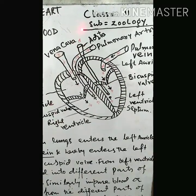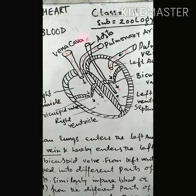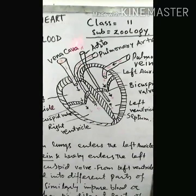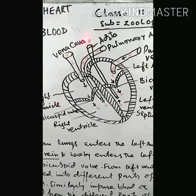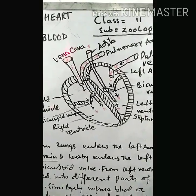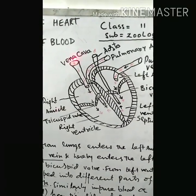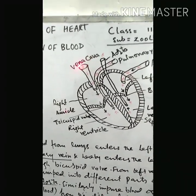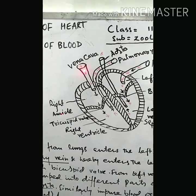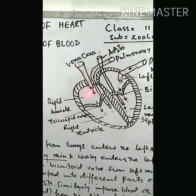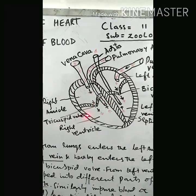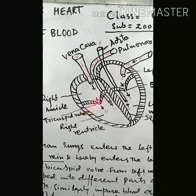From the different parts of the body — deoxygenated blood from the fingers, head, legs, other tissues, digestive system, cranium, all parts of the body — blood comes by a large vessel called the vena cava, a type of vein. It carries the deoxygenated blood and collects it into the right auricle. From the right auricle, blood passes into the right ventricle through the tricuspid valve.